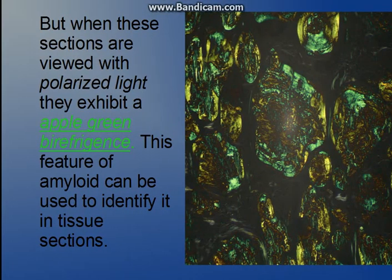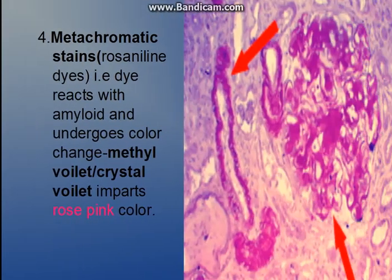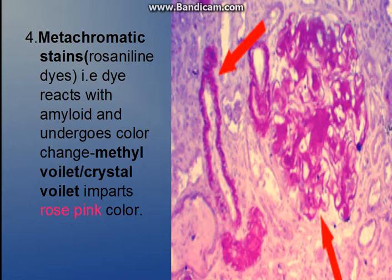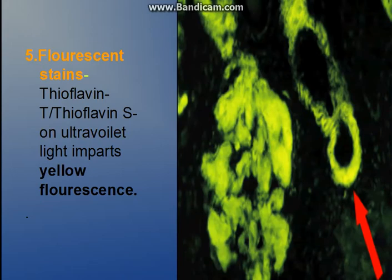When these sections are viewed under polarized light, they exhibit apple green birefringence. This is a specific test to identify amyloid in tissue sections. Now going to metachromatic stains — these are stains like methyl violet and crystal violet. They react with the amyloid to give a rose pink color, as we can see in the picture.